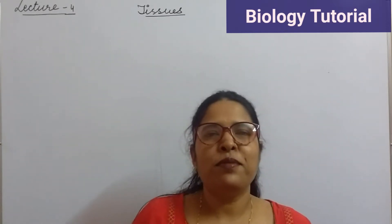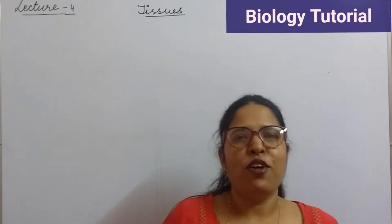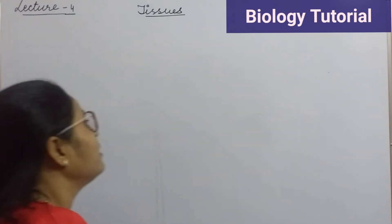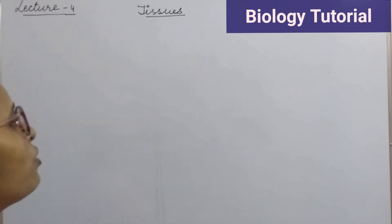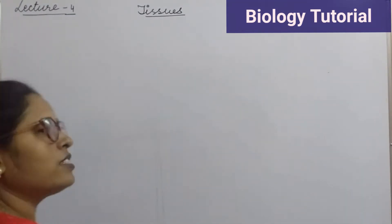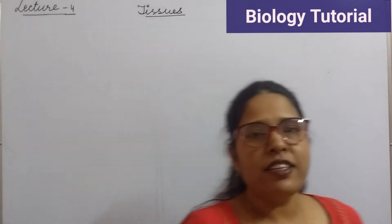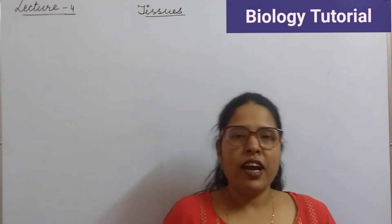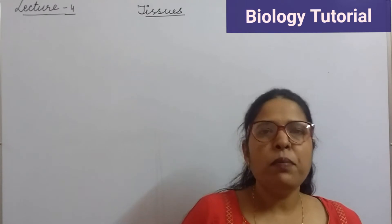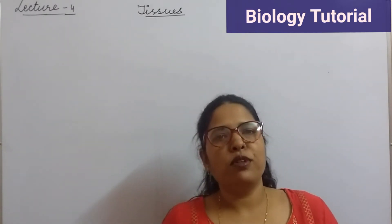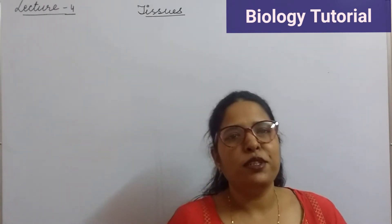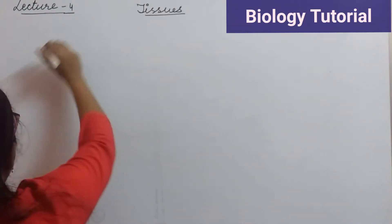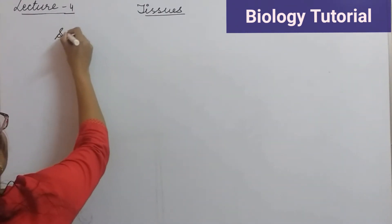Hello students, welcome to the next lecture of the chapter Tissues, for 9th class. We had discussed about parenchyma and colenchyma, which are simple permanent tissues. The one more simple permanent tissue is called sclerenchyma, and here we are going to discuss about sclerenchyma tissue.